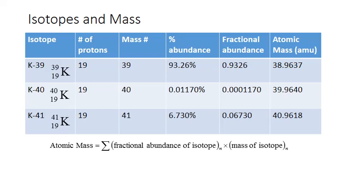Here's the weighted average formula for calculating atomic mass. It's the sum of a series of terms — that's what that big Greek letter sigma stands for, sum of a series. The number of terms depends upon the number of isotopes we have. For each isotope, we simply multiply the fractional abundance of that isotope by the mass of the isotope.